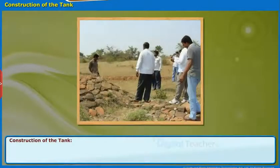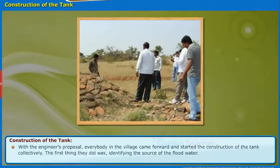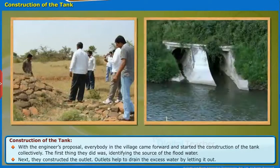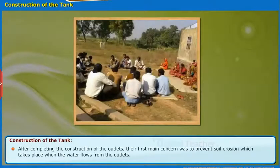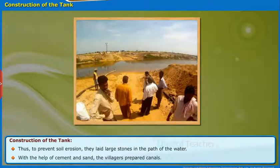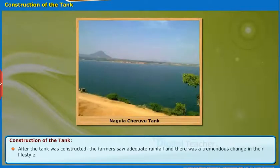Now let us know how the Nagula Chiruvu tank was constructed. With the engineer's proposal, everybody in the village came forward and started the construction of the tank collectively. The first thing they did was identifying the source of the flood water. Next, they constructed outlets to drain the excess water. After completion of the outlets, their first main concern was to prevent soil erosion which takes place when water flows from the outlets. To prevent soil erosion, they laid large stones in the path of the water with the help of cement and sand.